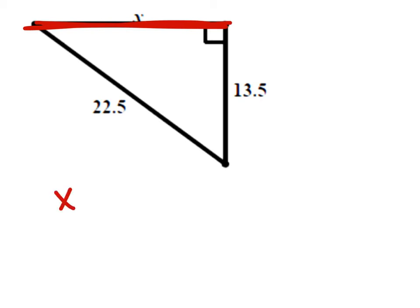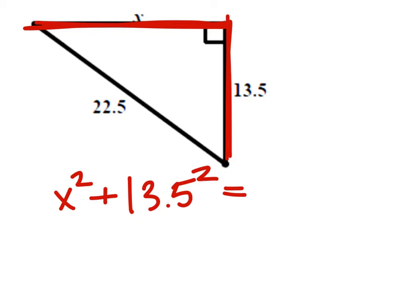So, we got x squared plus the other leg, which is 13.5. We will square that as well. And that should equal our hypotenuse, 22.5, but that will need to be squared as well.